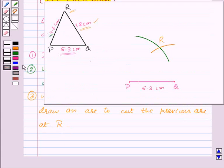Now join PR and QR to get the triangle PQR like this. So triangle PQR is the required triangle. And here PR is equal to 4.6 cm and QR is equal to 3.8 cm.